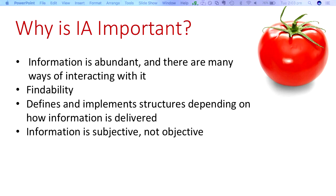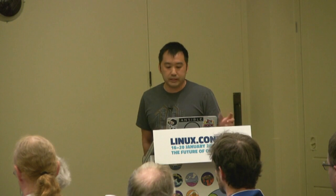Why is information architecture important? There's so much information out there and we have so many ways of interacting with it. Information architecture addresses the problem of making information findable and understandable. It also defines the structures that can be implemented depending on how your information is delivered. For example, viewing a website on a desktop or laptop should ideally function differently to viewing it on a mobile device, though a user's experience in being able to find information should be fairly similar.